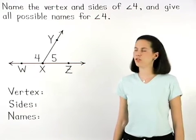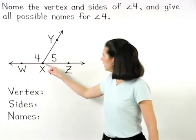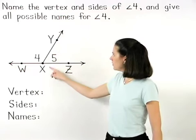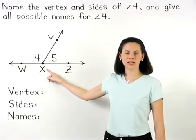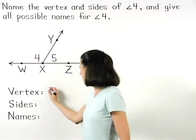Since the two rays that form angle 4 are rays XW and XY, the endpoint that they share is point X, and therefore X is the vertex of the angle.